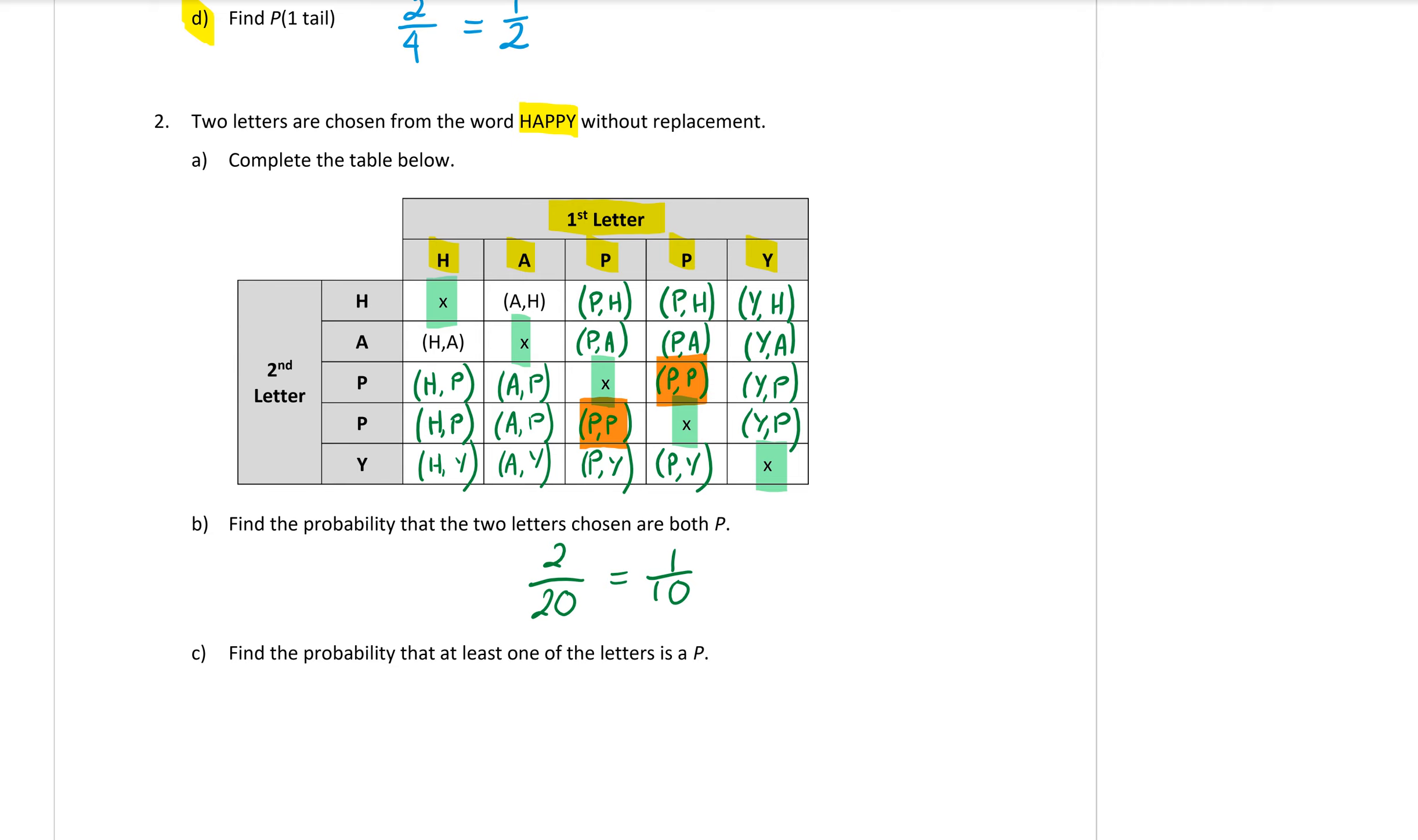Part c says find the probability that at least one of the letters is a P. So it could have one P, but it could also have two P's because it says at least one P. So I'm going to keep the two P's highlighted, the ones in orange here, plus I want to highlight anything else that has a P in it.